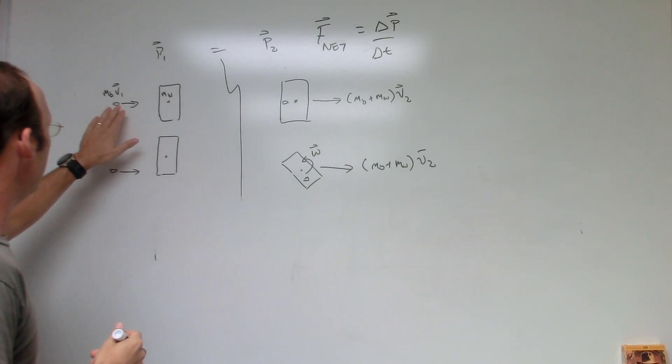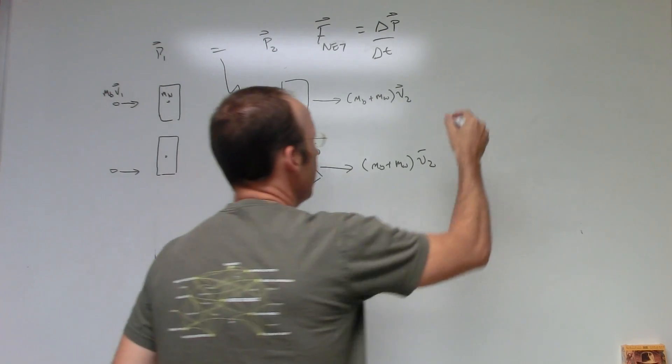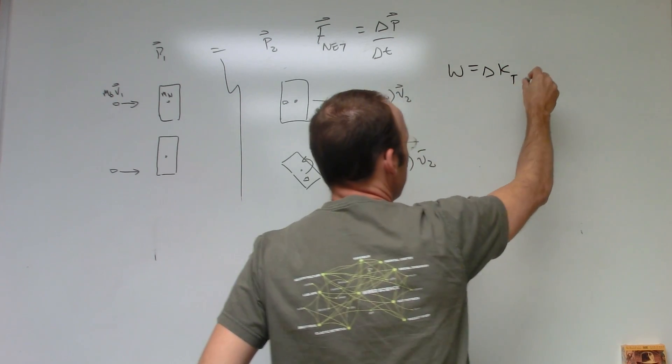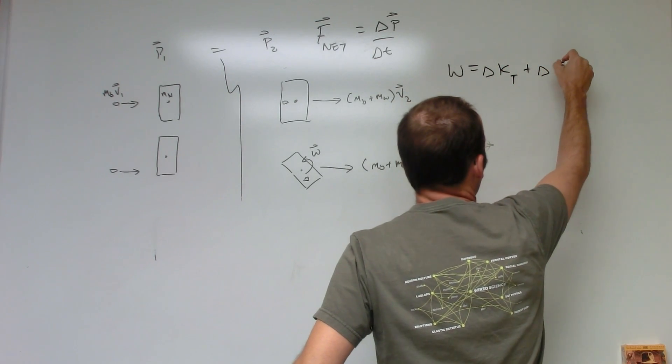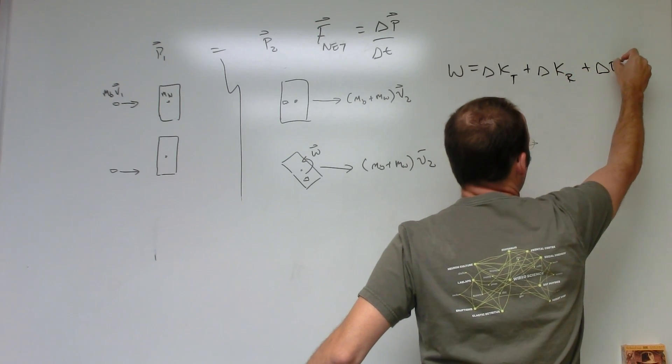So let's look at the first block. Let's look at work energy. If again I take the bullet and the block as my system, then I get work is a change in kinetic energy, translational, plus a change in kinetic energy, rotational, plus a change in internal energy.